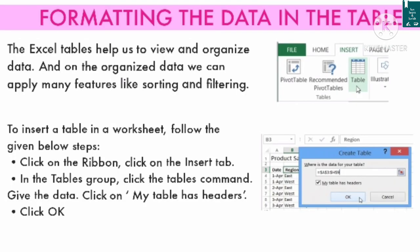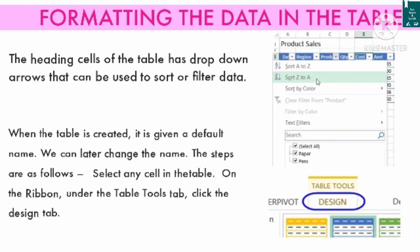Formatting data in a table: the Excel table helps us to view and organize data, and on the organized data we can apply features like sorting and filtering. To insert a table in a worksheet: click on the ribbon, click on the Insert tab, in the Tables group click the Tables command, enter the data, click 'My table has headers', and click OK. The heading cells of the table have drop-down arrows that can be used to sort or filter data. When the table is created it is given a default name.